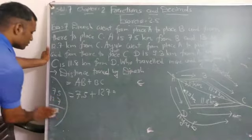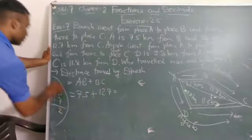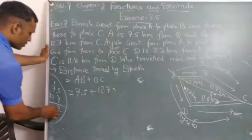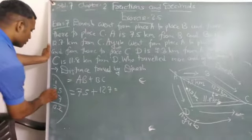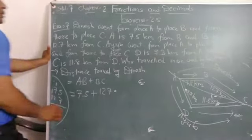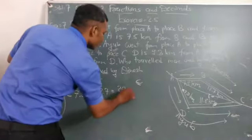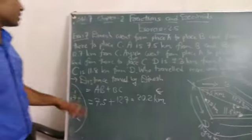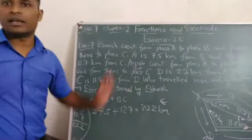Now here, 7.5, 12.7. 5 plus 7 is 12, carry 1. 7 plus 1 is 8, 8 plus 2 is 10, carry 1. 20.2 km. This distance is traveled by Dinesh.